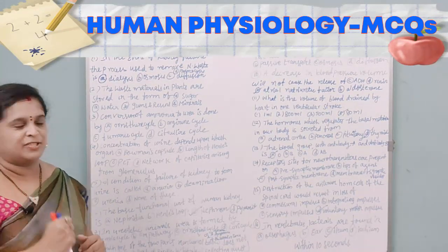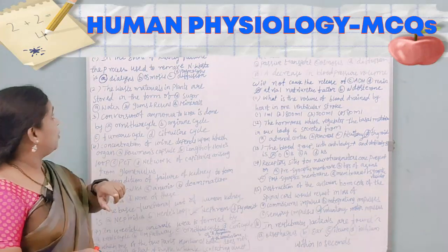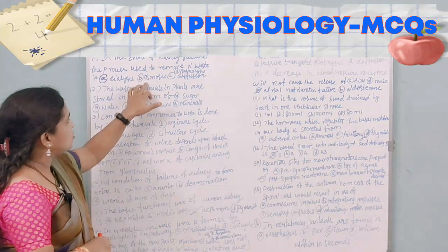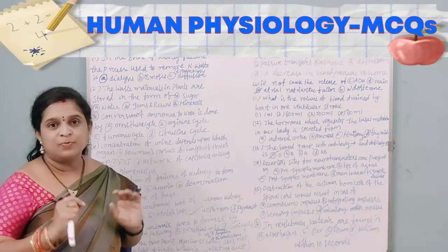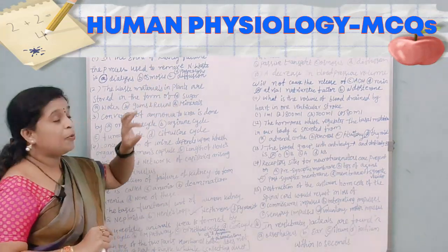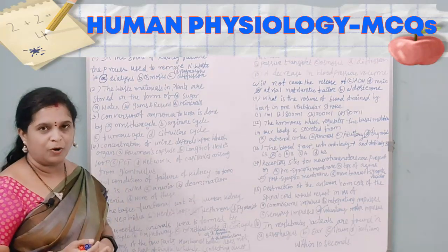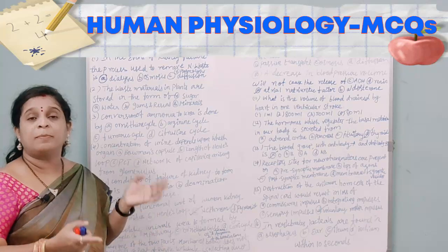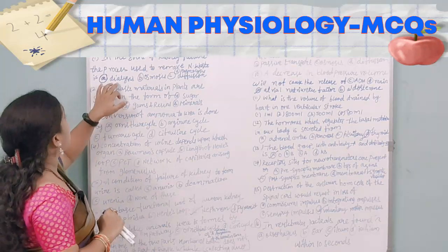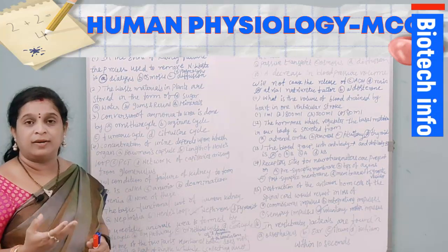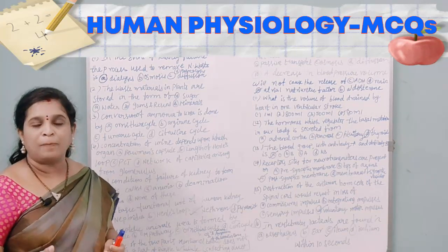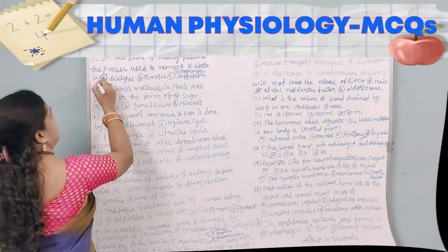The first question: in the event of kidney failure, the process used to remove nitrogenous waste is — (A) dialysis, (B) osmosis, (C) diffusion, or (D) plasmolysis. Plasmolysis is when a plant cell loses water in a hypertonic solution. Diffusion is movement of molecules from higher to lower concentration. Osmosis is movement through a semipermeable membrane. Dialysis is the removal of excess water and toxic substances from the body when kidneys are not working properly. The answer is dialysis.